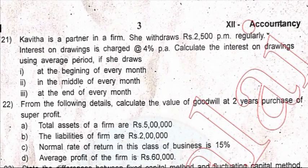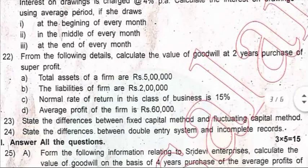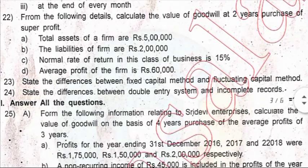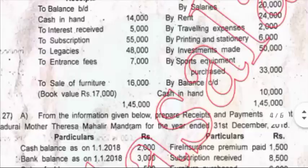A partner withdraws 500 per month regularly; interest on drawings charged at 4% per annum. Calculate the interest on drawings using the average period. Question 22: from the following details, find the value of goodwill — two years' purchase of super profit. Question 23: state the difference between fixed capital method and fluctuating capital method. Question 24: state the differences between double entry system and incomplete records.